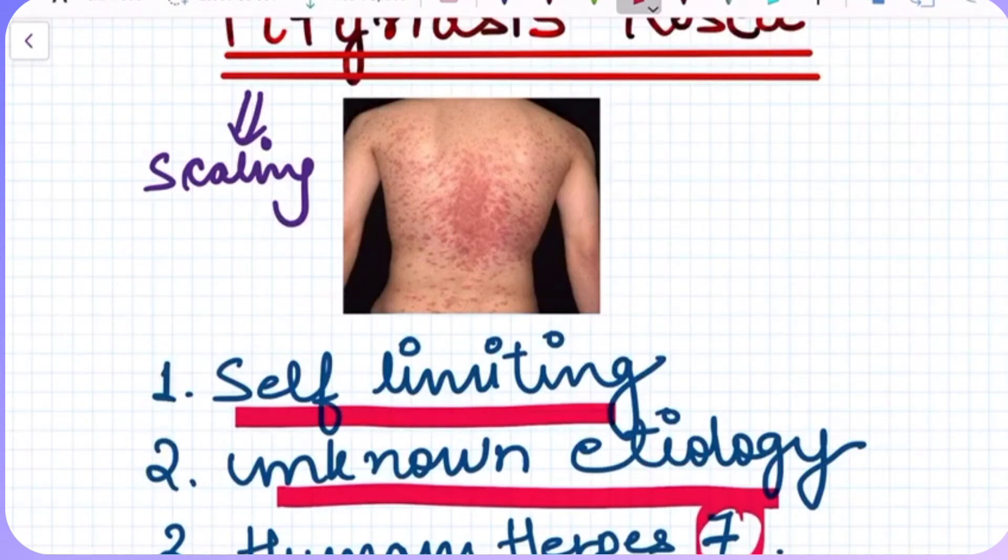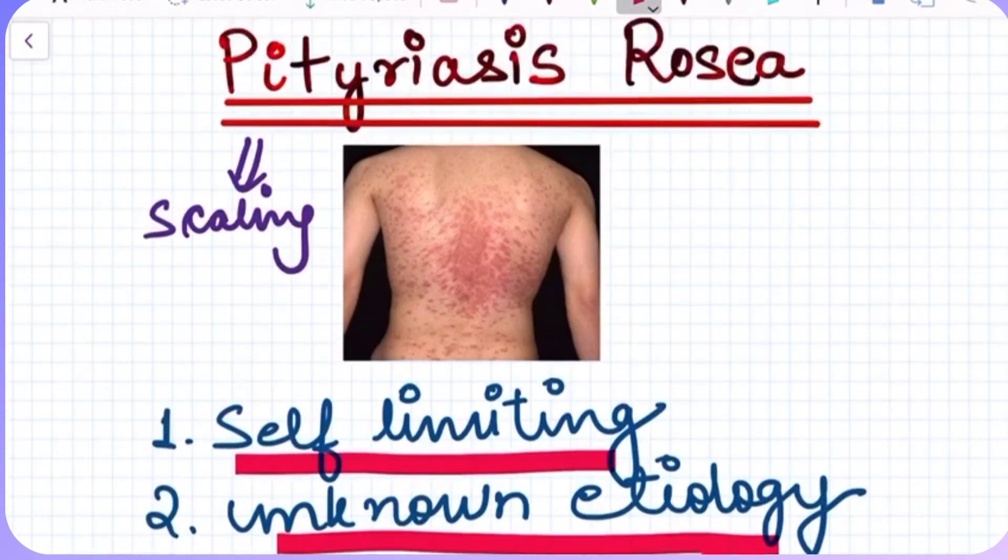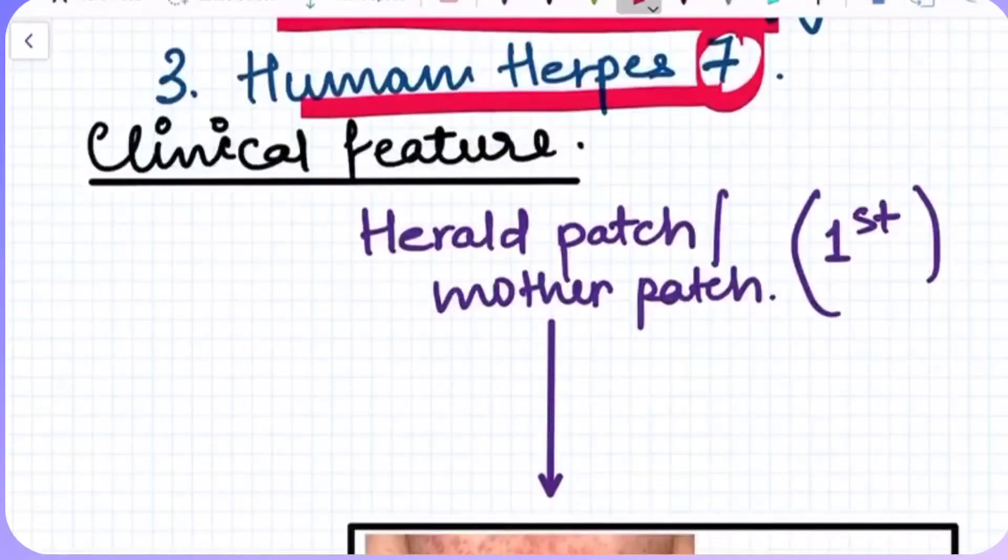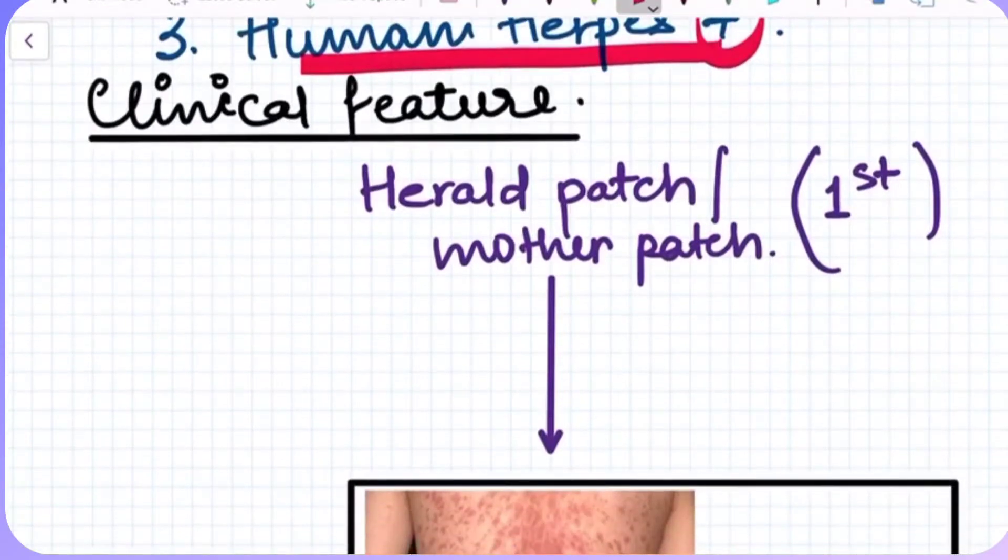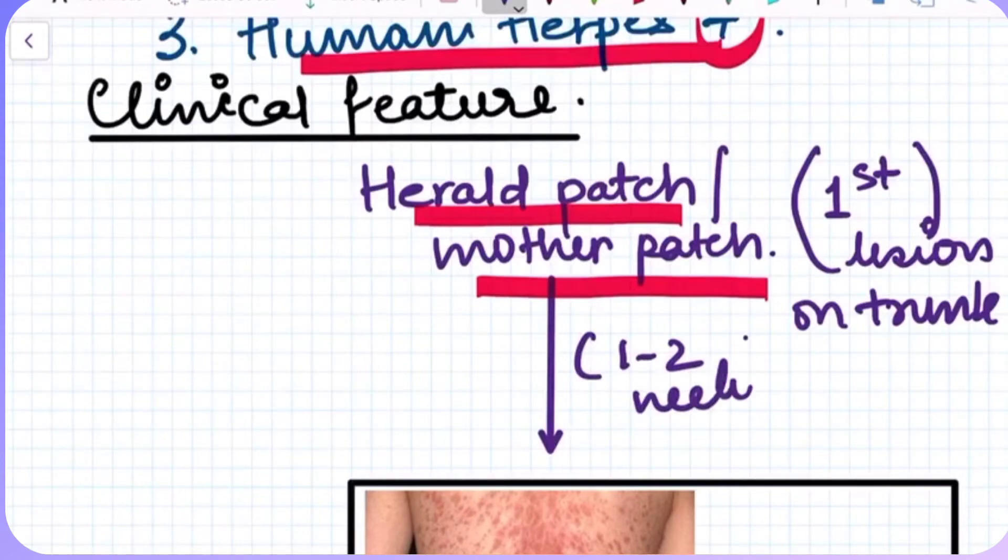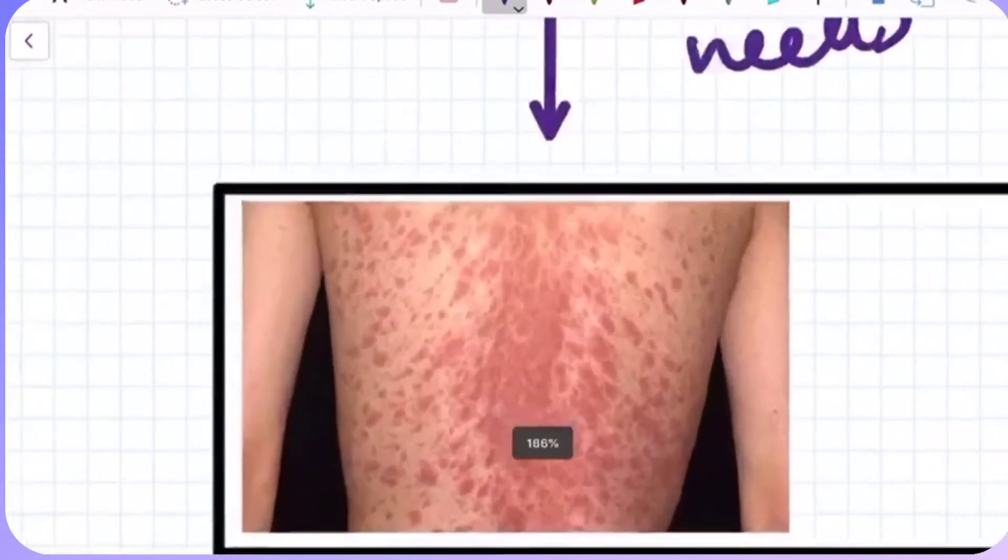In this picture, we can see what this condition represents. If we talk about the clinical features, the first lesion to come is called the herald patch or mother patch. This is the first lesion that we see on the trunk. In about one to two weeks, it develops into something like this.